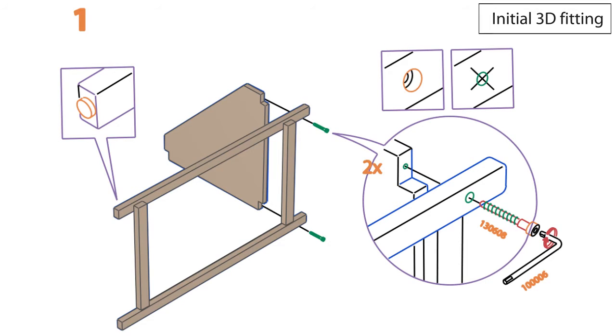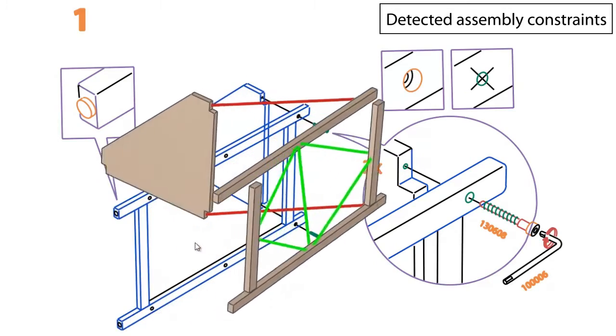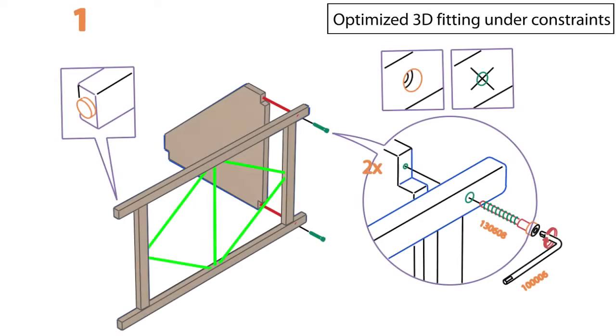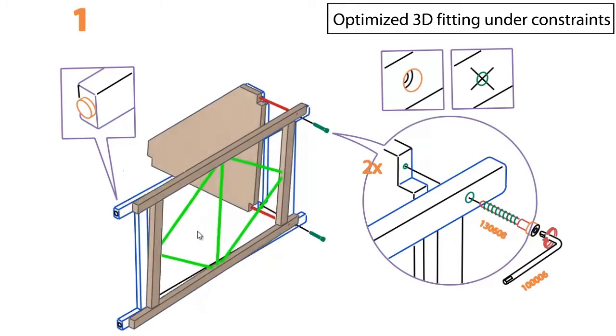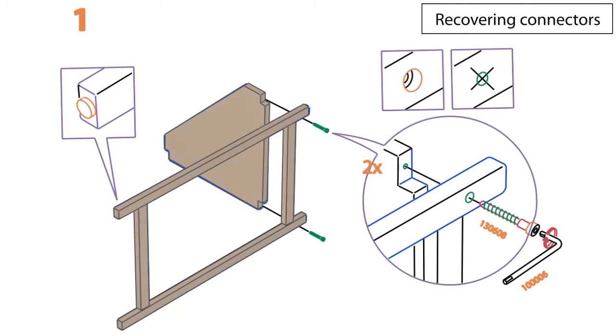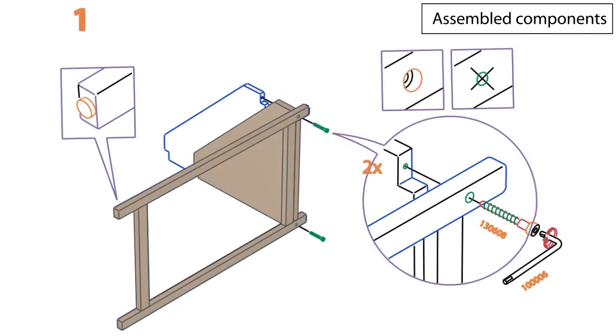The 3D fitting algorithm produces an initial 3D shape for each furniture component and infers the assembly constraints from 2D drawings. We further optimize them under the assembly constraints. Based on the optimized 3D furniture components, we match the mechanical connectors in our database to the 2D elements and assemble the furniture components and connectors together.